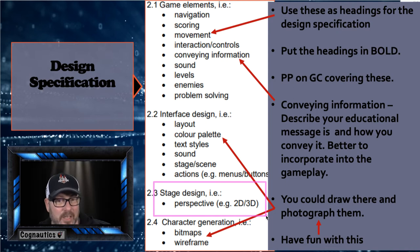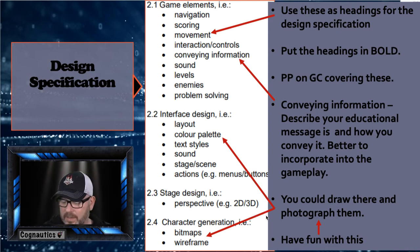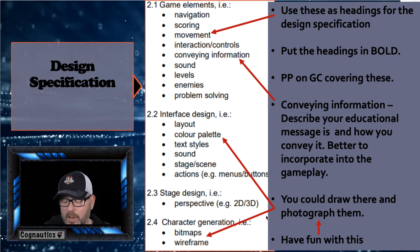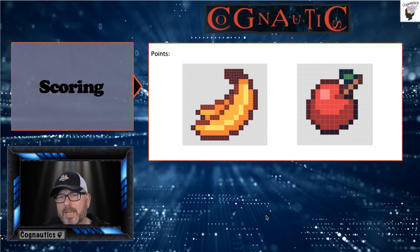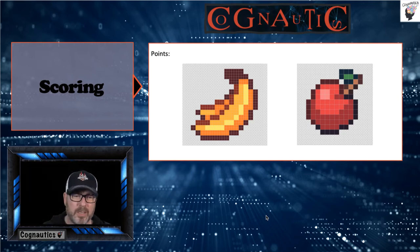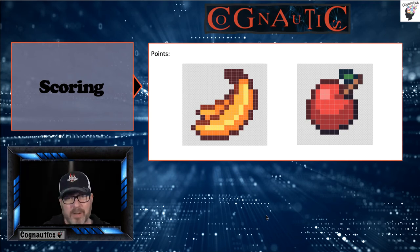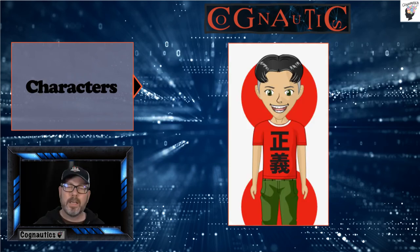So that's the overview — the list of things you need to incorporate in the design specification. Let's move on now and look at some examples of what we've seen in the past. This was done about two years ago — a student had put in that they were going to pick up bananas and apples, linked to a game about orangutans, and they gave different levels of points.